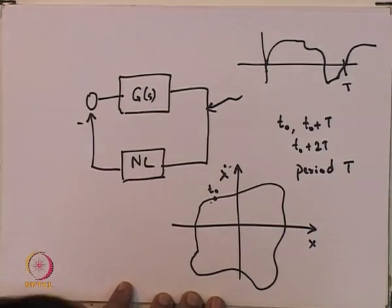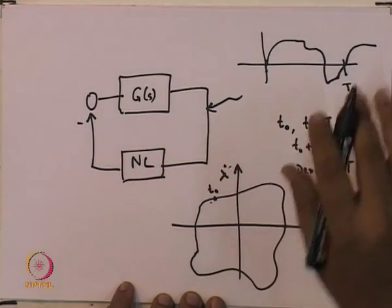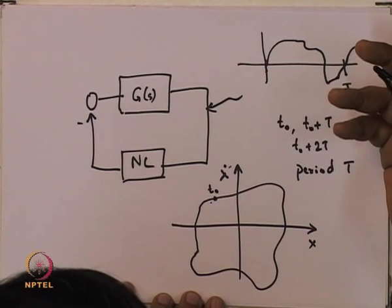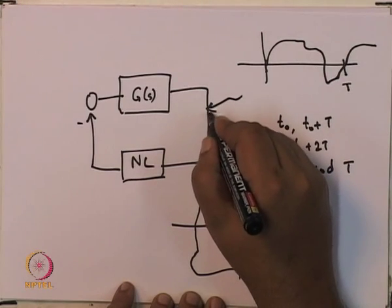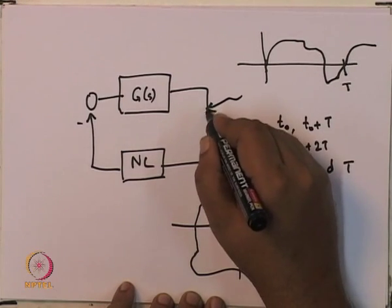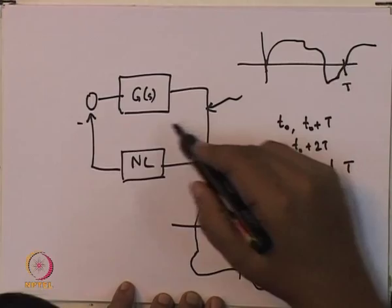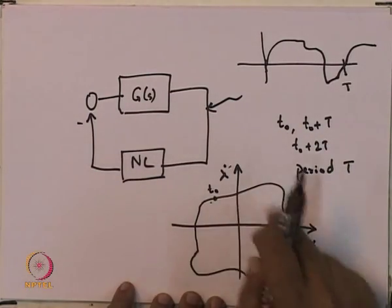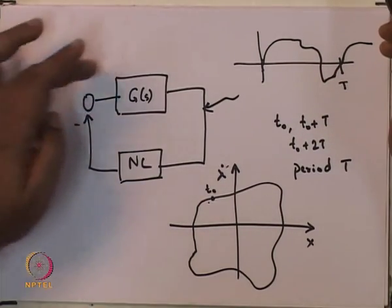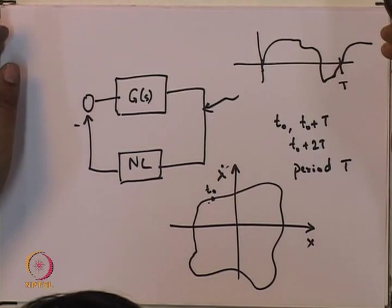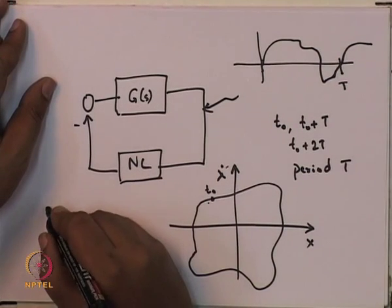When you have a nonlinear system, one would like to know if it has a limit cycle and if so whether those limit cycles are stable or not. One way to detect limit cycles is by observing signals on an oscilloscope — if that signal is periodic, then the system is oscillating in a limit cycle. Analytically, one of the methodologies used to find if a given system has a limit cycle is what is called the method of harmonic balance.